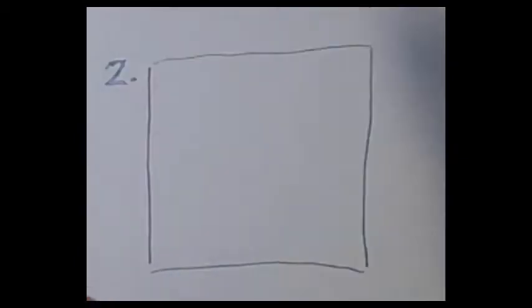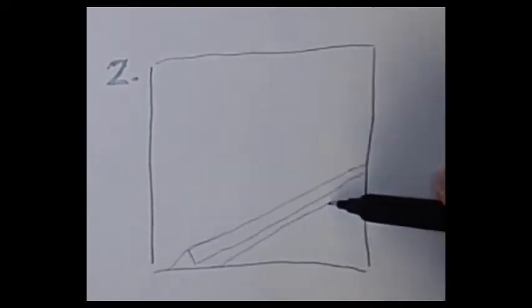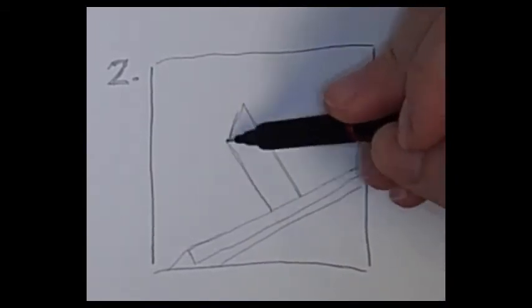Here's a second angle, same still life, different angle. And the same idea. I start by drawing the thumbnail box. And then I'm going to draw the edge of the chair.